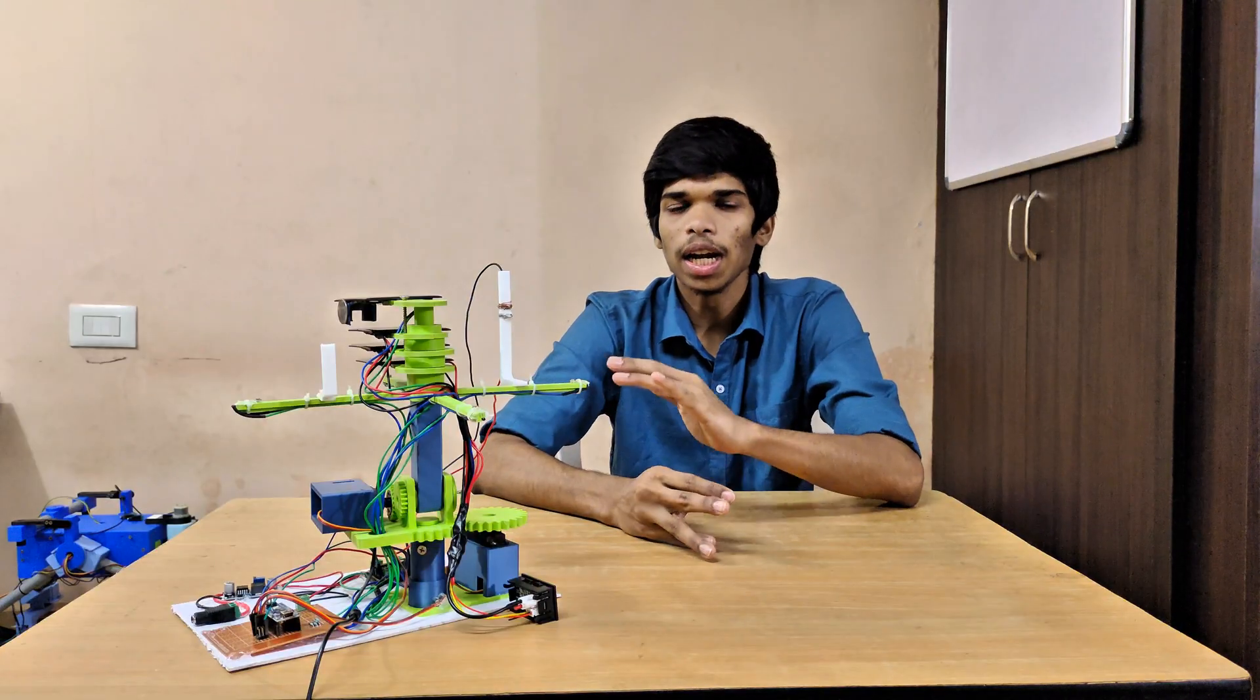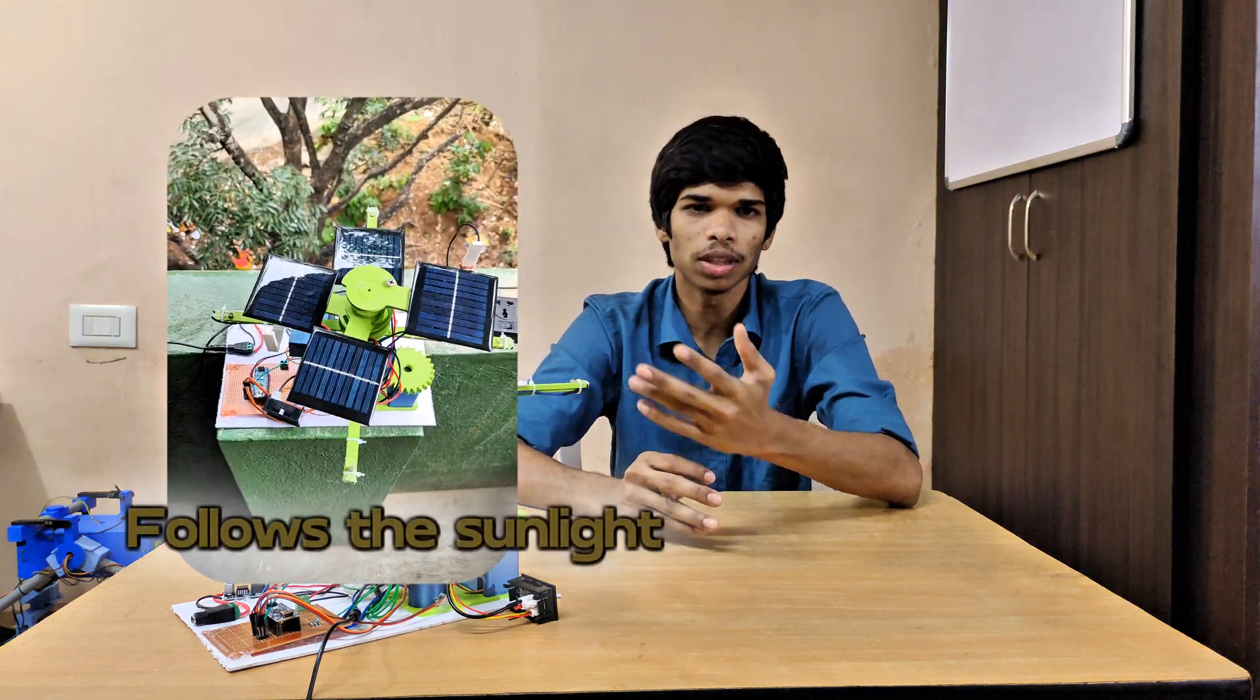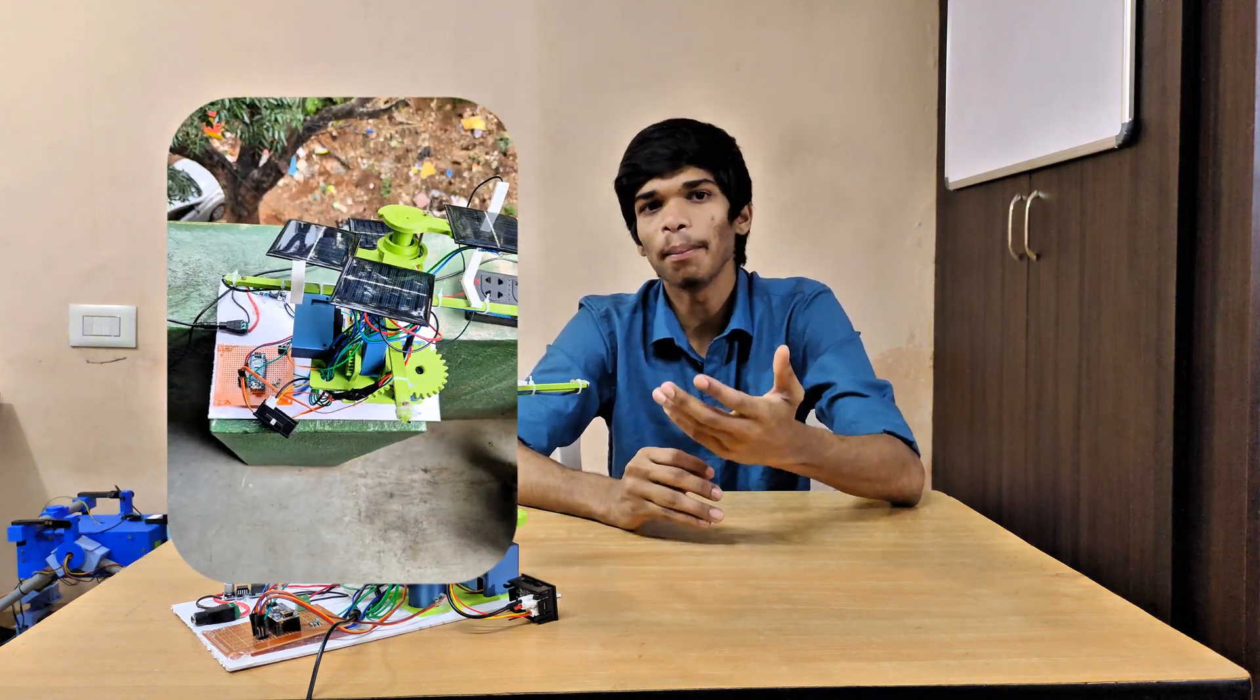This system tracks the sun, where the sun has more brightness. This system follows the sunlight so that we get maximum power from the solar cells.